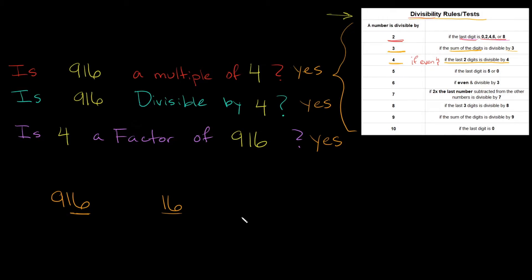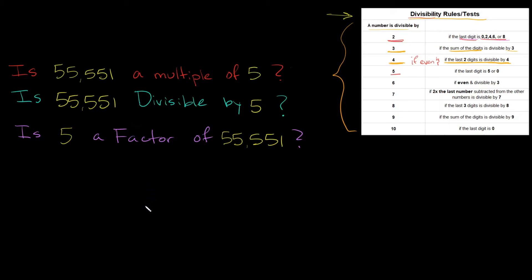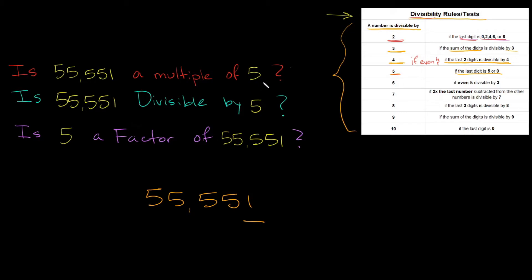Now let's move on to 5, which is pretty easy. Is 55,551 a multiple of 5, or is it divisible by 5? Is 5 a factor of 55,551? Our test says a number is divisible by 5 if the last digit is 5 or 0. The last digit of 55,551 is 1, so it fails the test. Is 55,551 a multiple of 5? No. Is it divisible by 5? No. Is 5 a factor of 55,551? No. The number simply has to end in 5 or 0 to pass.